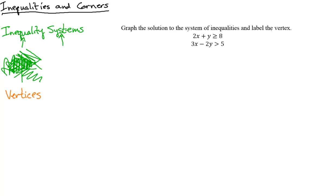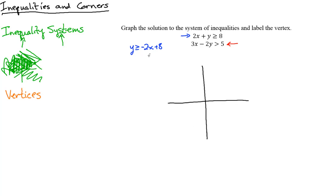Let's graph the solution to the system of inequalities and label the vertex. We'll use colors so we can see how each works — red for one, blue for the other. The blue one is 2x + y ≥ 8. Solving for y gives y ≥ -2x + 8. We graph it: y-intercept at 8, slope is -2.